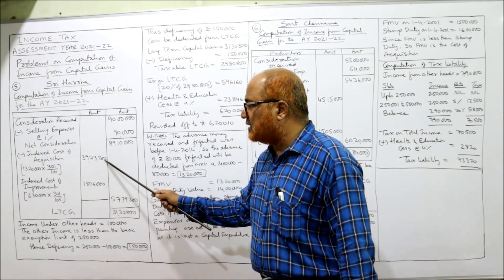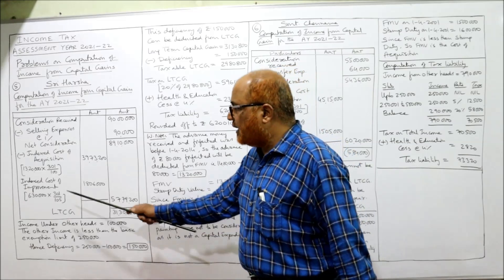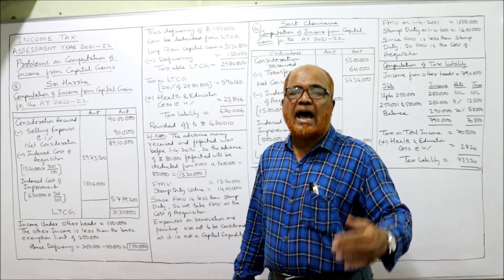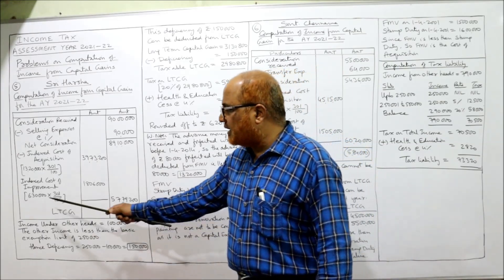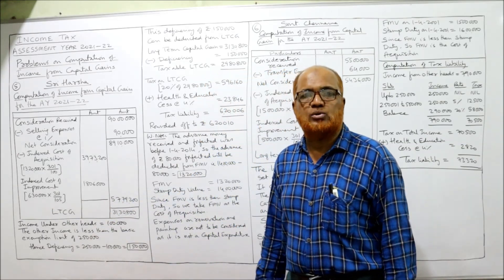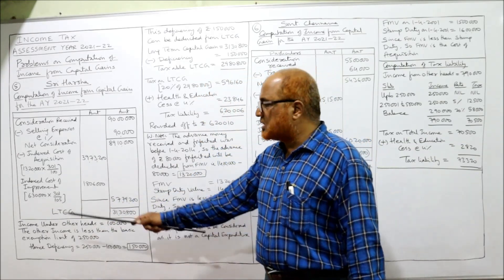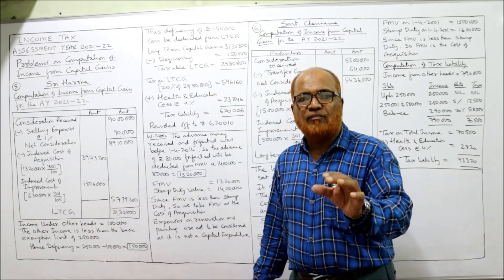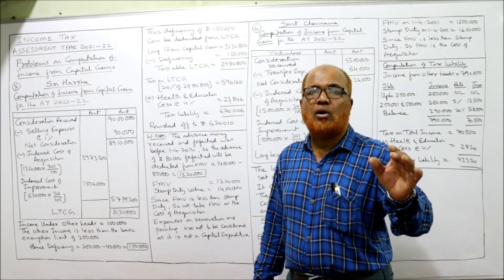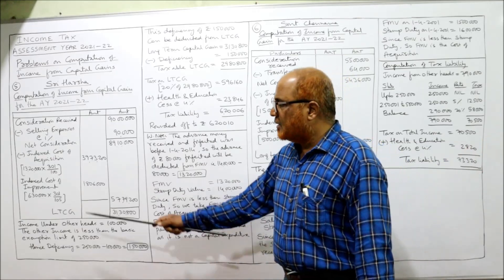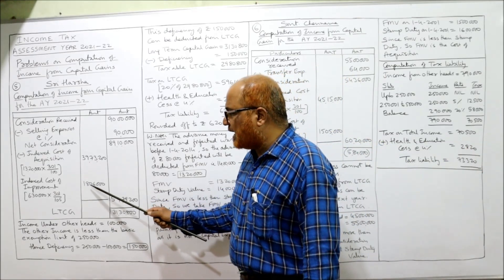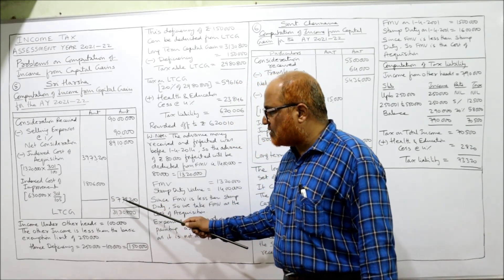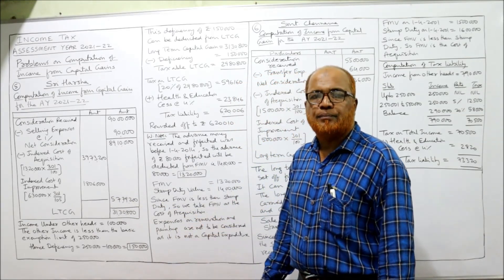Now the indexed cost of improvement: one more floor was added, improvement expenditure of Rs. 6,30,000. So Rs. 6,30,000 × 301/105 = Rs. 18,06,000. The total of indexed cost of acquisition and indexed cost of improvement comes to Rs. 57,79,000 approximately.